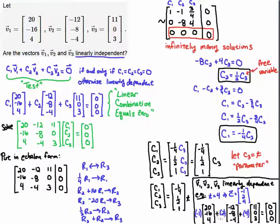Therefore I found a c1, c2, c3 that are not zero such that when I take this linear combination I get the zero vector. So these three vectors are linearly dependent.